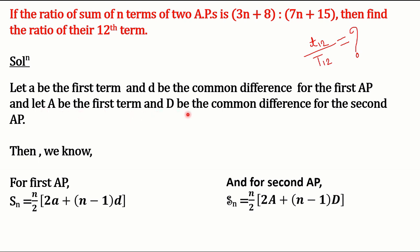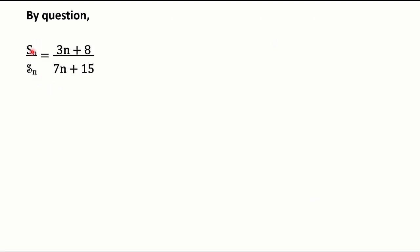After this, the question has said that the ratio of the sum of n terms — that is, this Sn over this Sn — is provided as (3n + 8) to (7n + 15). So by equation: Sn divided by Sn is equal to (3n + 8) over (7n + 15).